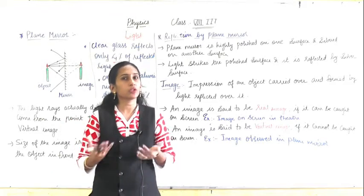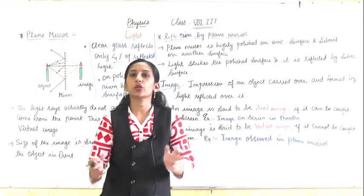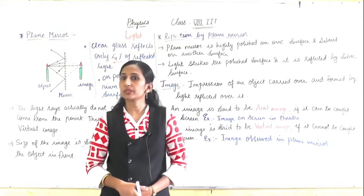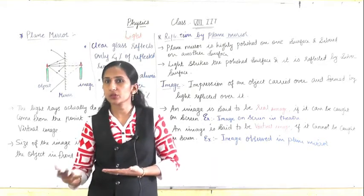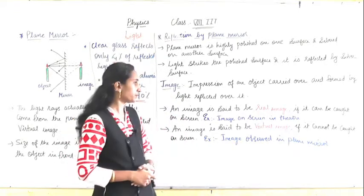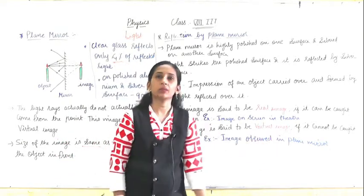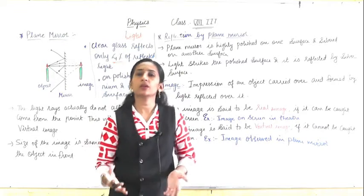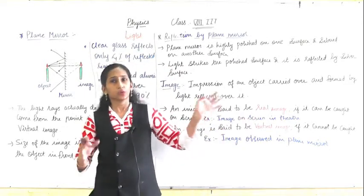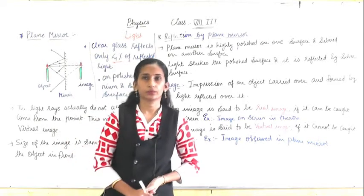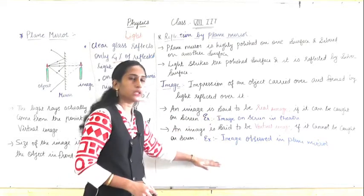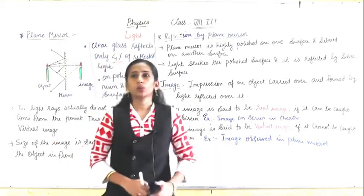What is virtual image? Virtual means you can see the image but you cannot capture it — you can see it but you cannot keep it. That is a virtual image. For example, you can see yourself in still water, but can you capture that image and keep it? No, you cannot. Similarly, the image you see every day in the plane mirror is a virtual image. That is the difference between real image and virtual image.